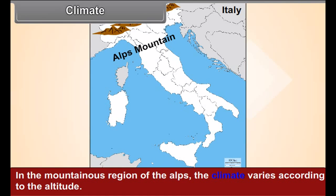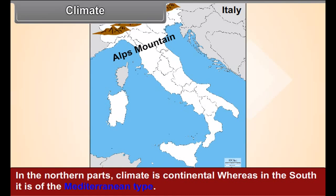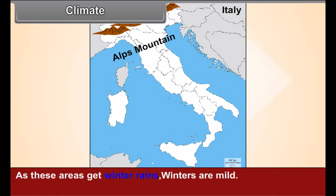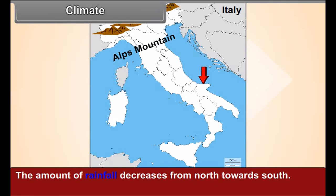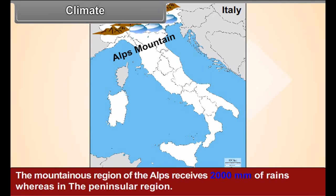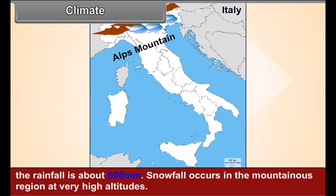Climate: in the mountainous region of the Alps, the climate varies according to altitude. In the northern parts, the climate is continental, whereas in the south it is of the Mediterranean type. These areas get winter rains; winters are mild, and bright sunlight and dry weather are characteristics of the summers. The amount of rainfall decreases from north towards south. The mountainous region of the Alps receives 2,000 mm of rain, whereas in the peninsular regions the rainfall is about 600 mm.